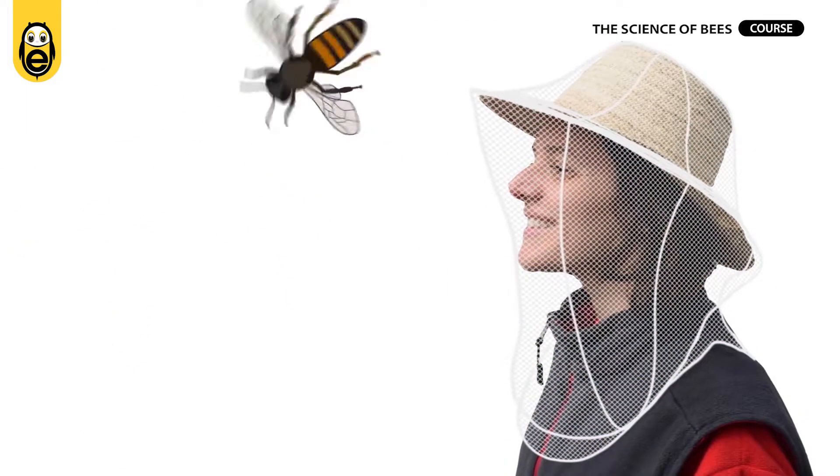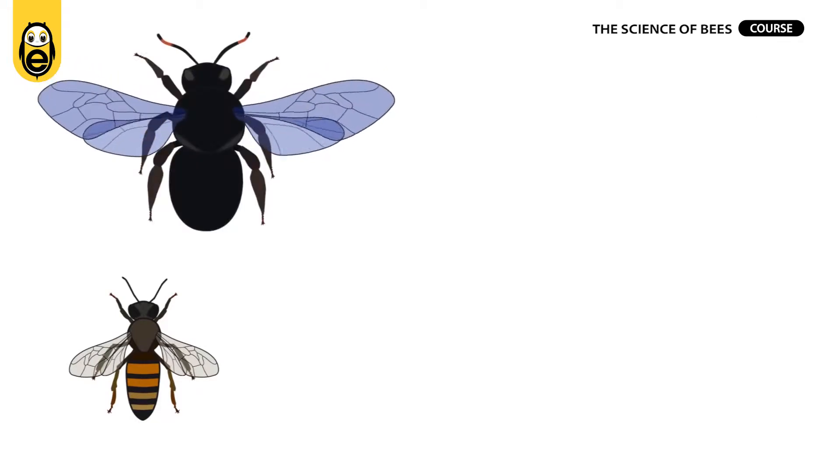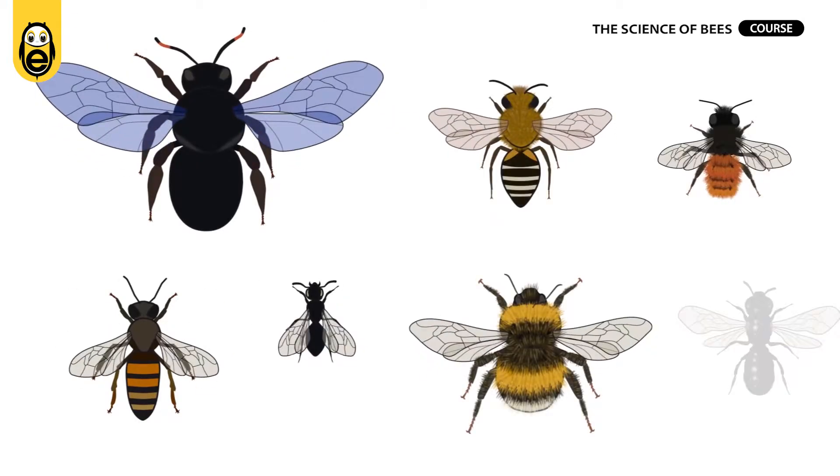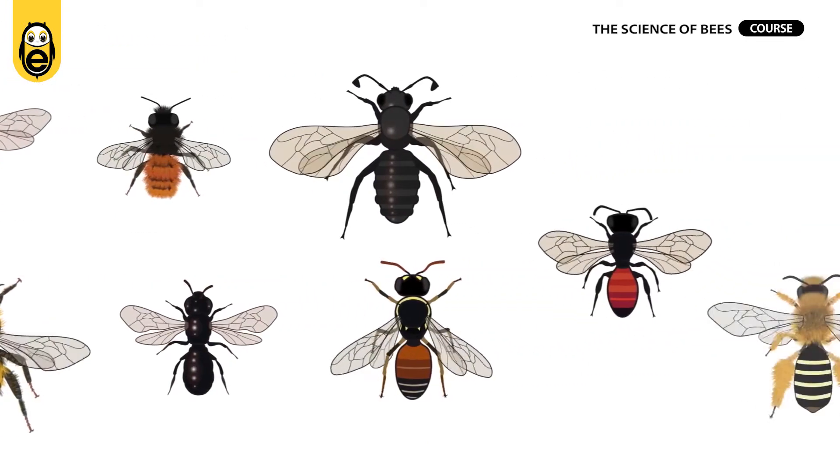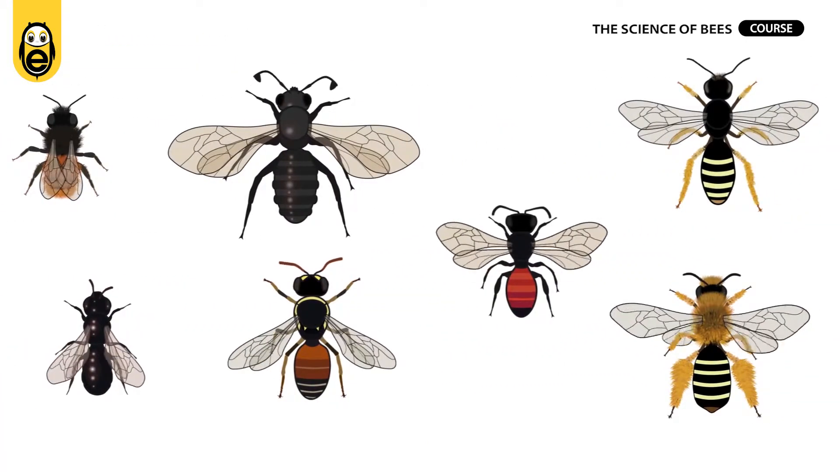But there are many more wild bees. Some are big, others small, hairy, or shiny. Some have long antennae, others short antennae. Some have a red behind, some have a yellow behind.